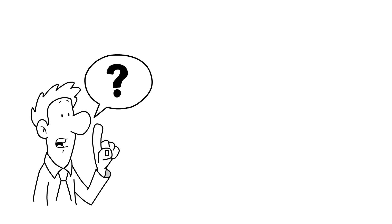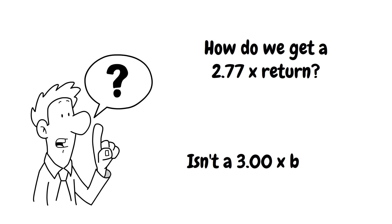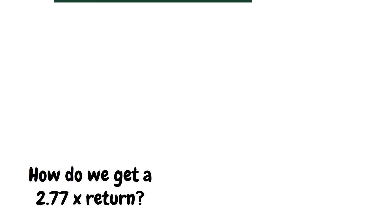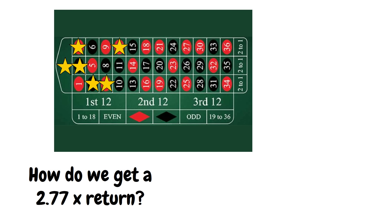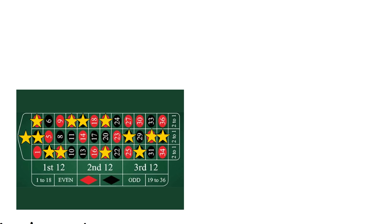So now there's two obvious questions. How in the world do we get a 2.77x return on roulette? And wouldn't it be better to have a 3x return as we will win more money? To answer the first question, we simply need to bet on 13 of the 37 numbers, and I suggest we do this by betting on the neighbor bets.